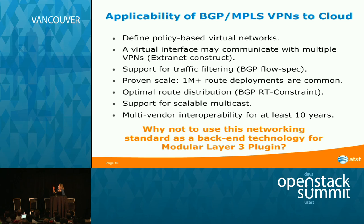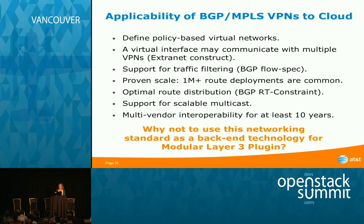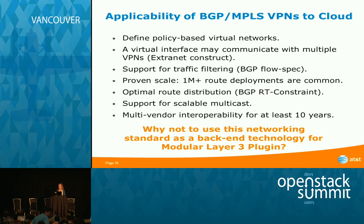The applicability to VPNs is obvious. Key properties of MPLS BGP VPNs that are useful in Neutron: VPN definition is policy-based by definition; virtual interfaces may be members of different VPNs via the extranet construct; support for traffic filtering via BGP flow spec — all standards-based. There is proven scale: deployments with many millions of routes are common — at AT&T we have multiple millions of routes with no scaling problems. There's optimal route distribution via BGP route constraints, support for scalable multicast, and multi-vendor interoperability for at least 10 years.